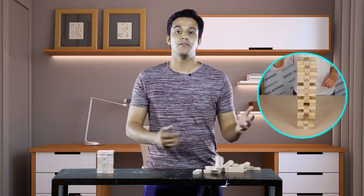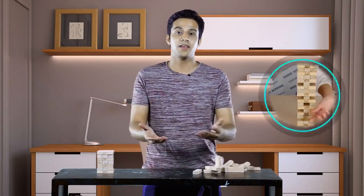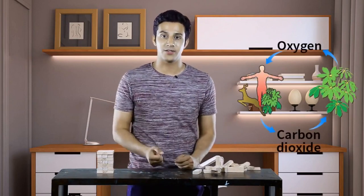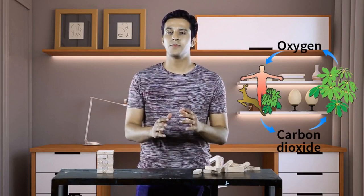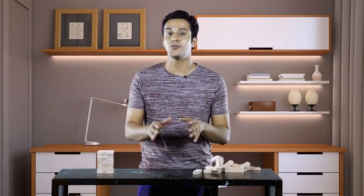Just like the Jenga blocks, decomposers take apart dead remains into tiny nutrients and return them back to the soil, which can then be used by plants to grow again. But it's not just living things like plants and animals that get recycled in this way. Even gases like carbon dioxide and oxygen have a cycle to keep the forest growing.